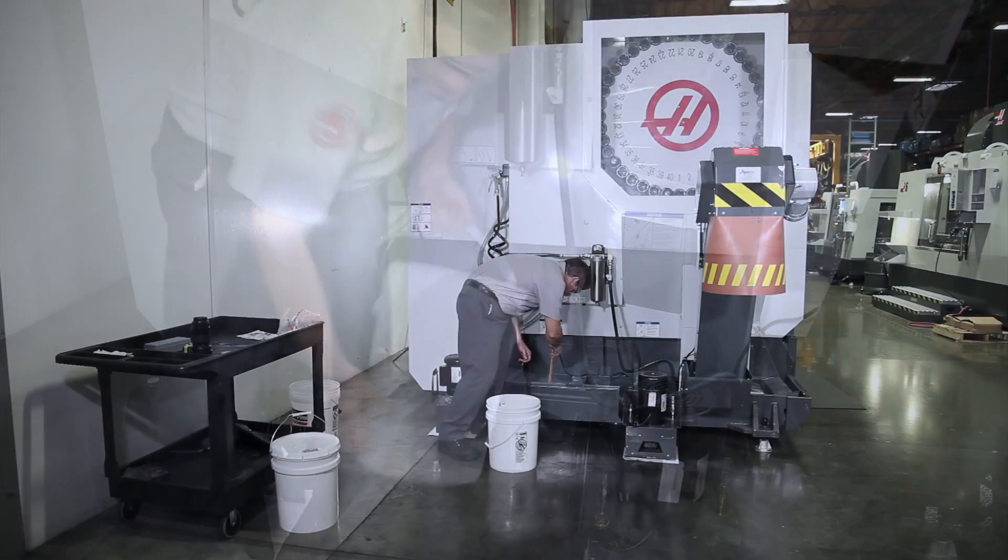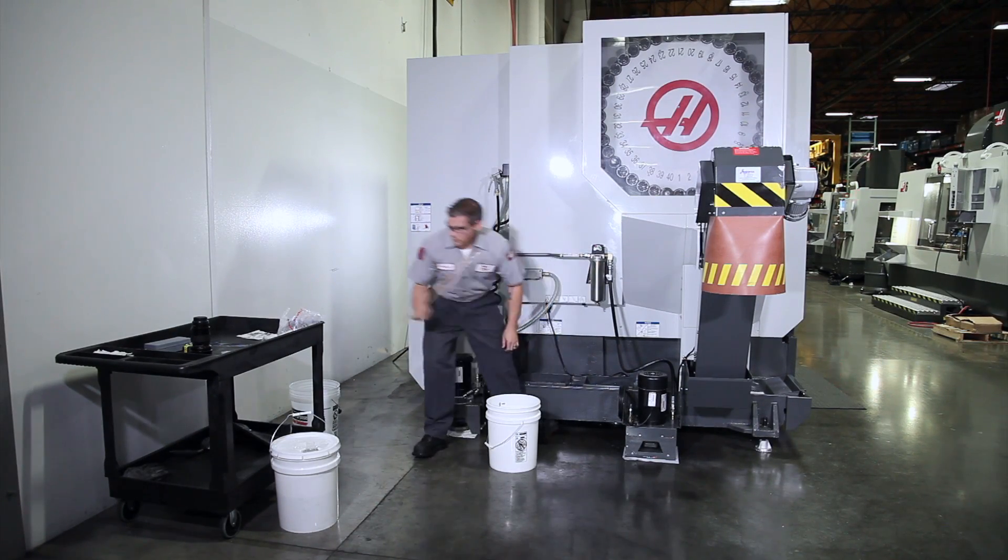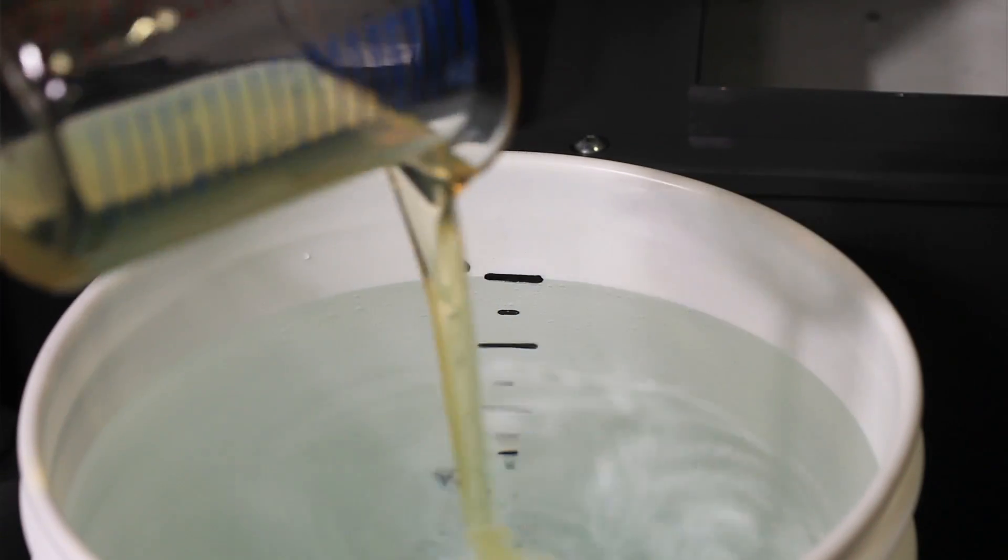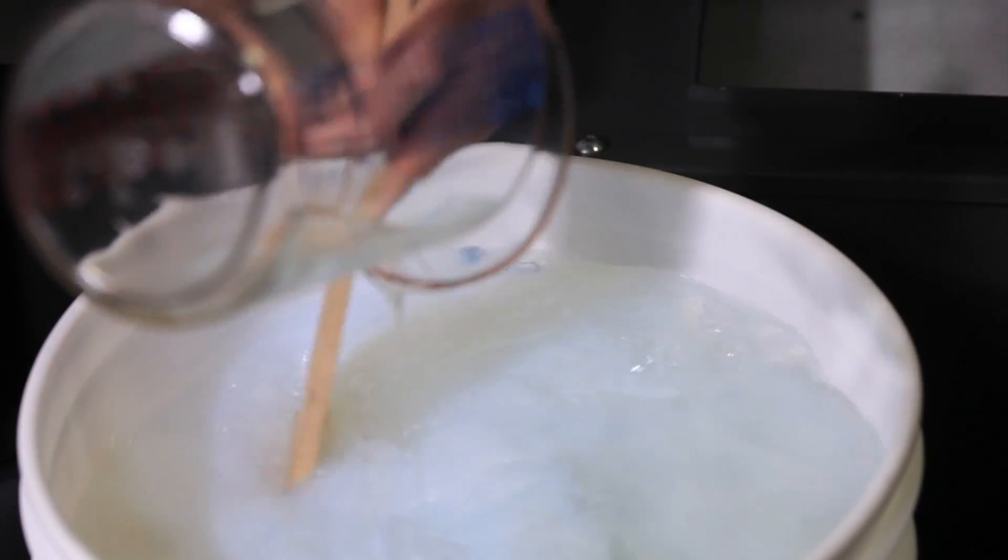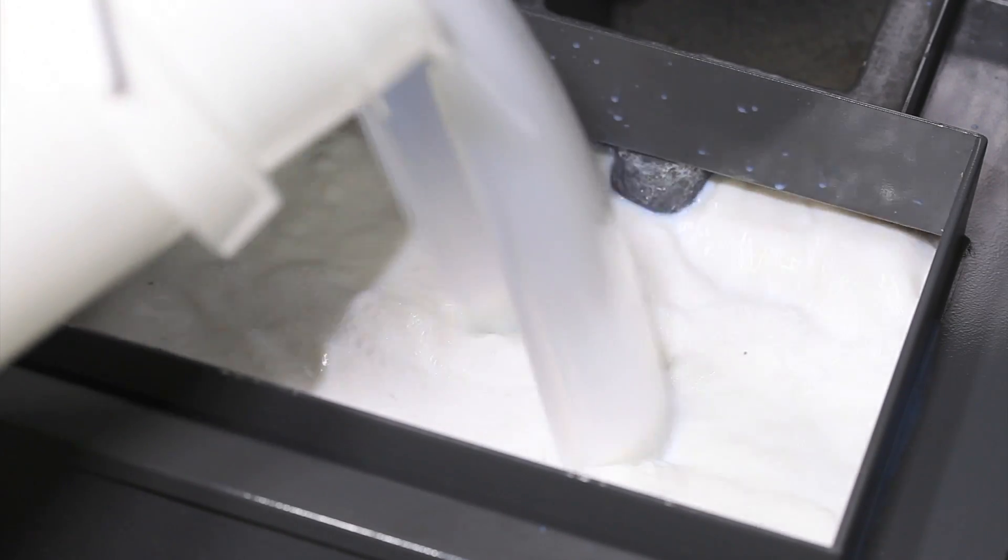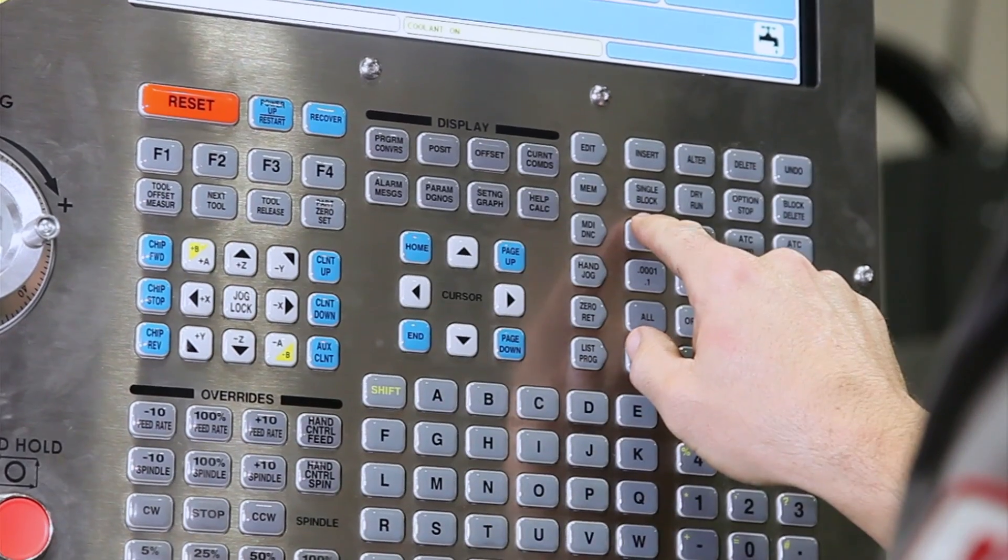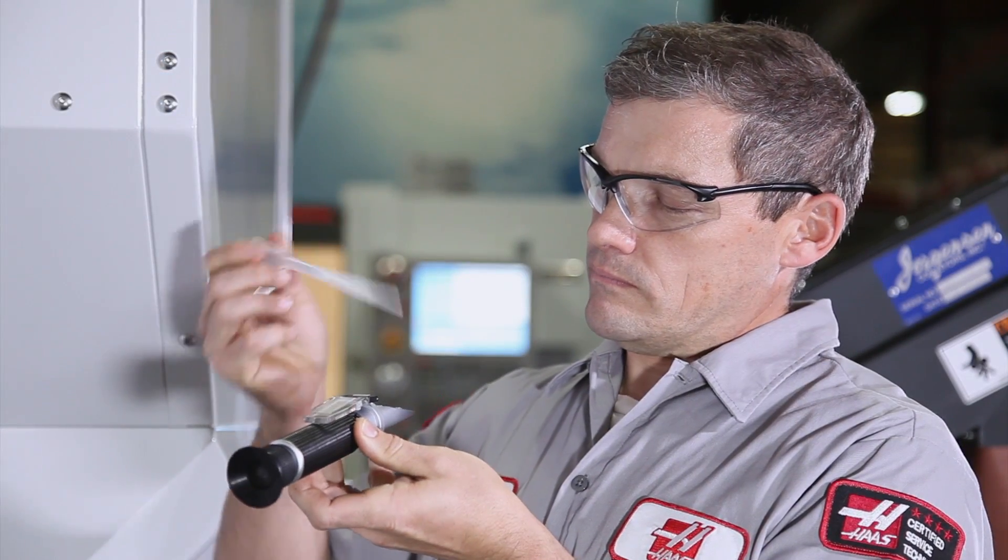The concentrate we're using for this machine doesn't emulsify very easily, so once again we'll make one percent buckets to fill the remainder of the tank. With the tank full, run the coolant system for 30 minutes to ensure that everything is completely mixed. Check the concentration.